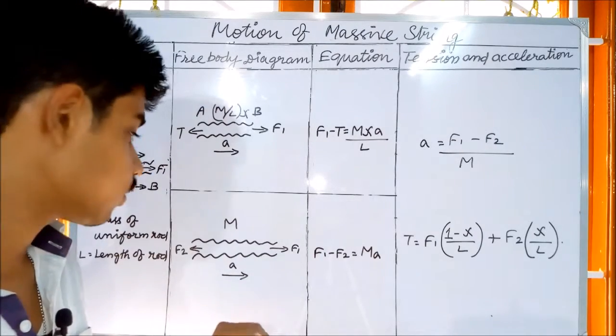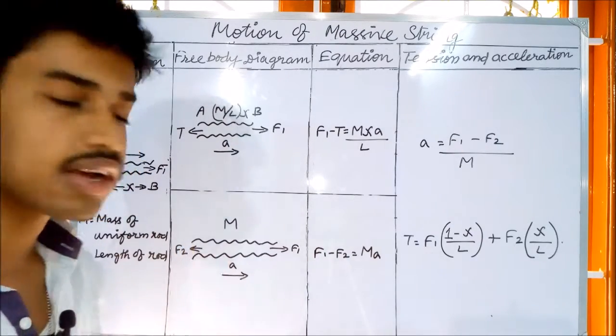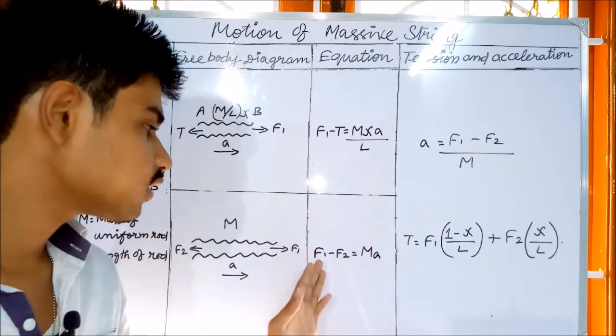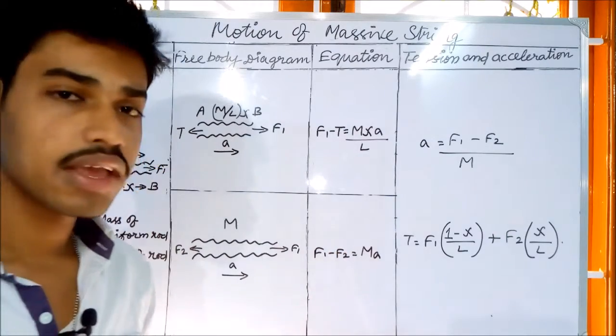So, what will the acceleration do? There are two forces. We can count the exact force: F1 minus F2 divided by MA.